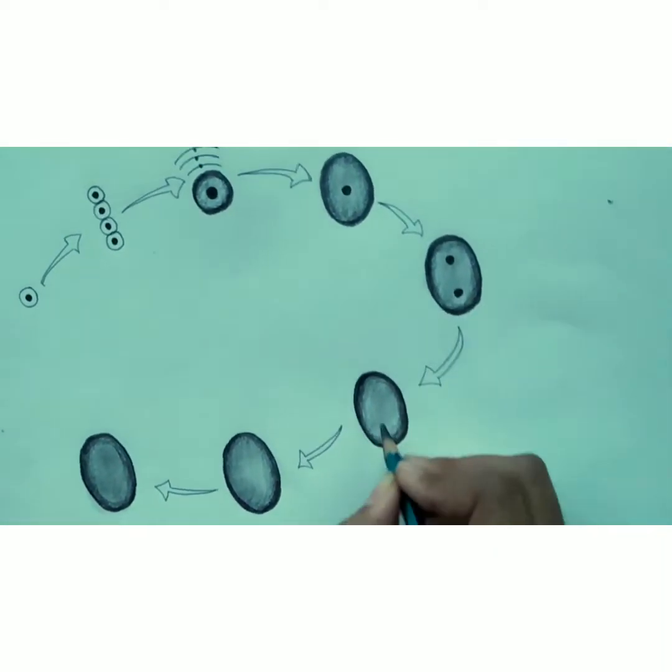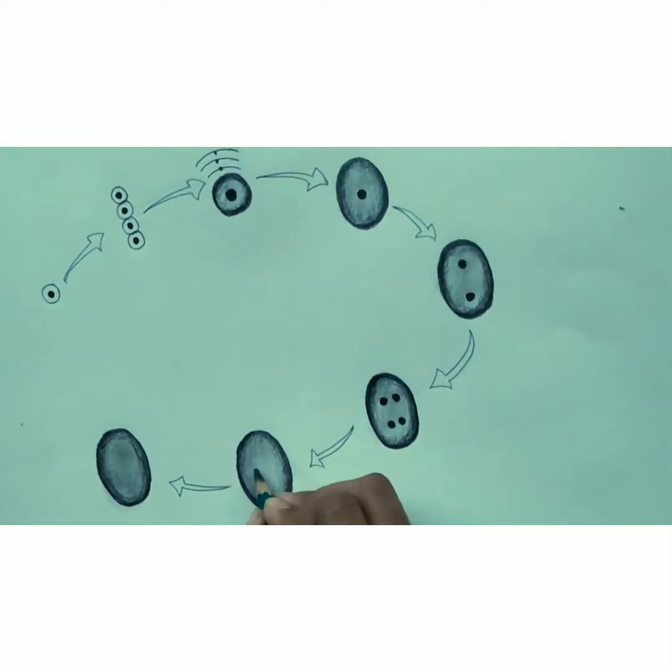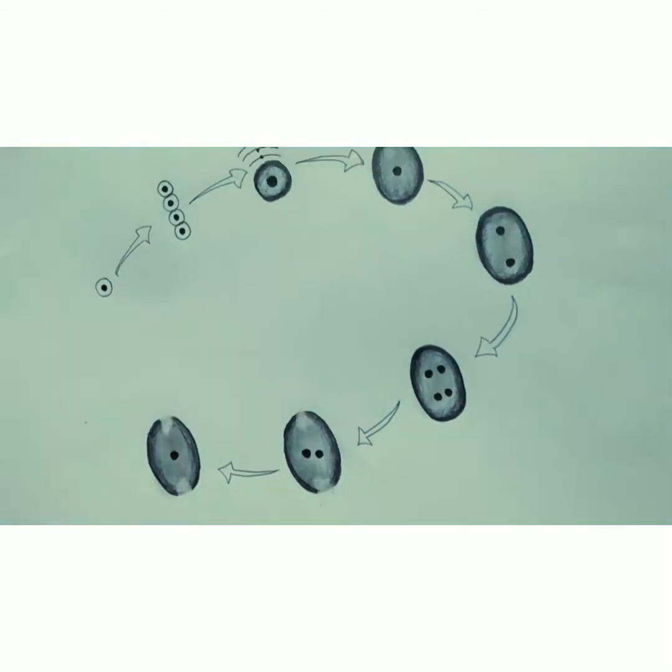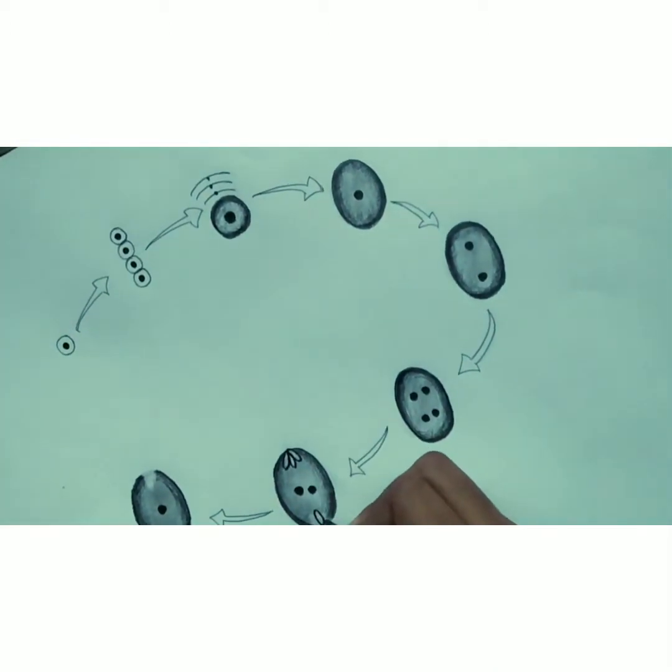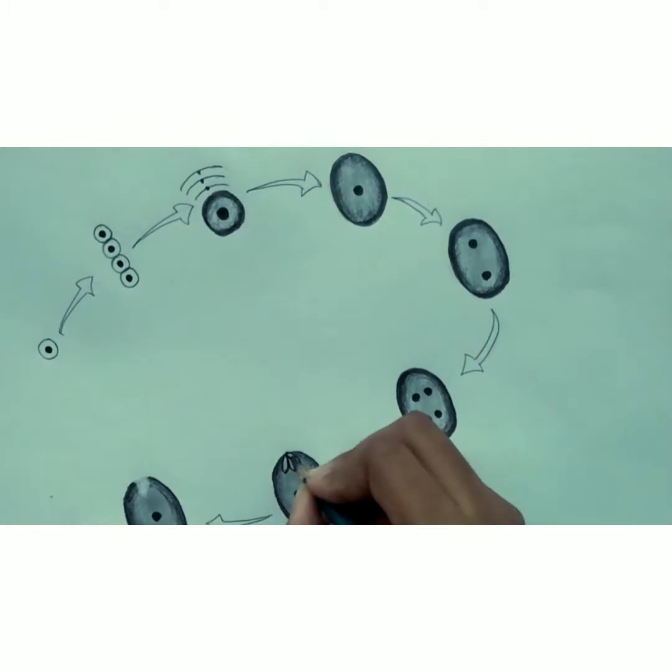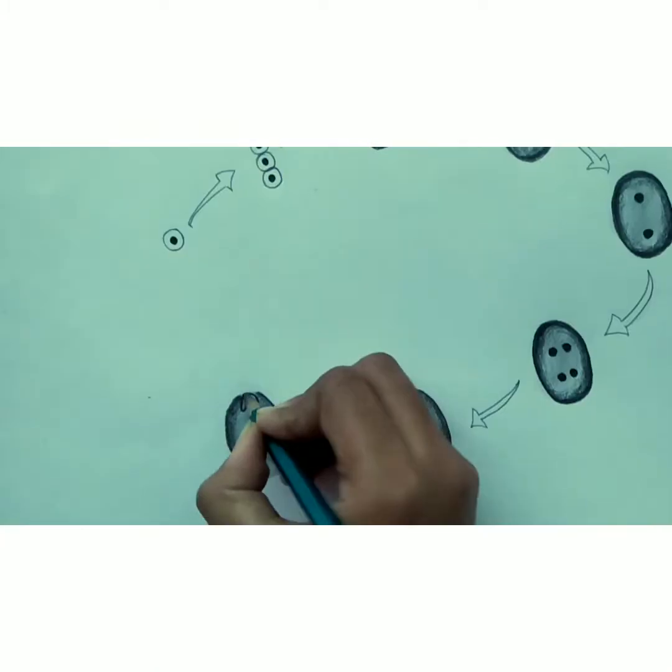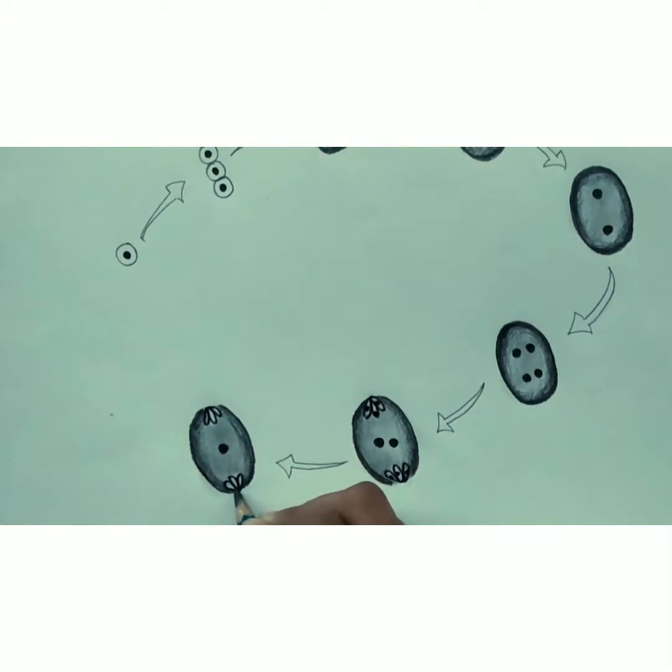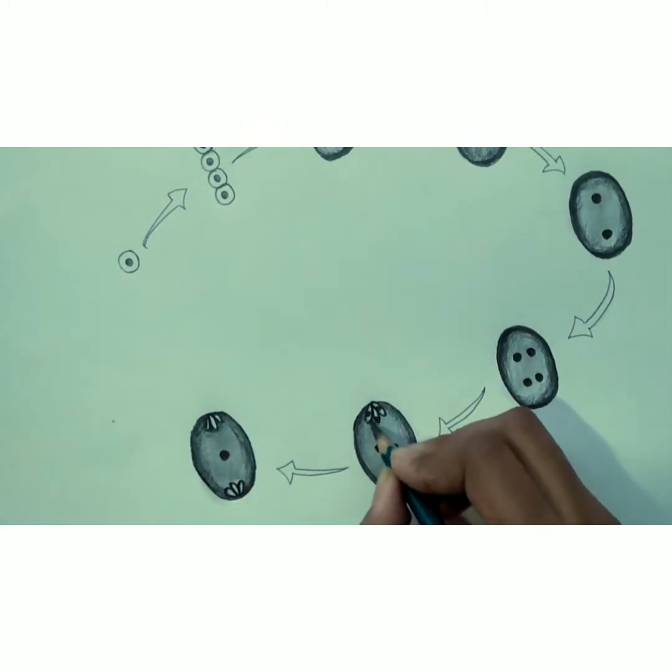Antipodal cells are group of three cells present at the chalazal end. The two haploid polar nuclei of large central cells fuse to form diploid secondary nucleus. This seven-celled and eight-nucleated structure is called an embryo sac.